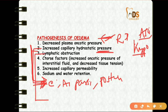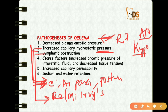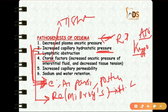The third cause is lymphatic obstruction, which leads to lymphedema. Examples include removal of axillary lymph nodes or inflammation of the lymphatics. One important term here is Milroy's disease, which is hereditary lymphedema. The fourth cause involves tissue factors such as increased oncotic pressure of interstitial fluid and decreased tissue tension.